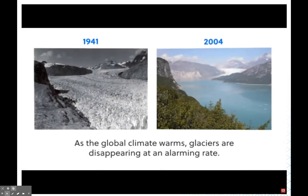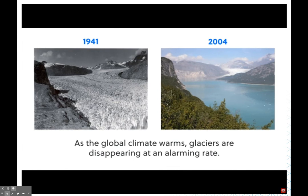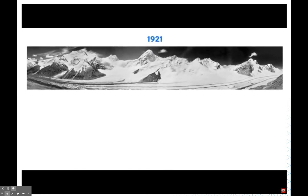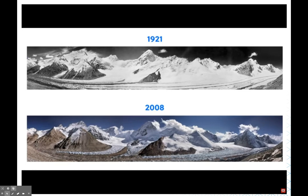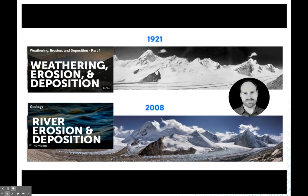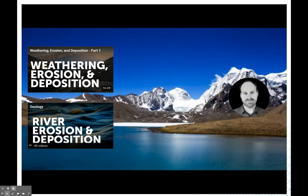As climate change continues and the planet warms, we're starting to see the disappearance of large-scale glaciation. Comparing the same spot 60 years apart, the majority of the ice has disappeared, and this is happening all over the planet. As the ice melts it adds fresh water to the oceans, causing sea level to rise, which is further complicating our complex atmospheric and climate systems — something scientists are actively exploring and trying to find solutions for.